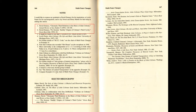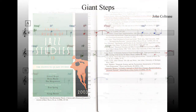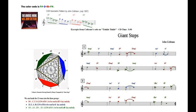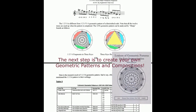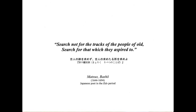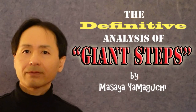You are now able to see Coltrane's 1-2-5-6 geometric pattern matches the melody of Giant Steps. The geometric pattern was originally used in Trinkle Tinkle, July 1957. The next step is to create your own geometric patterns and composition. Here's another good piece of advice: search not for the tracks of the people of old — search for that which they aspired to. I've given you the definitive analysis of John Coltrane's Giant Steps. Don't forget to subscribe to this channel for better, real study. Thank you for watching.